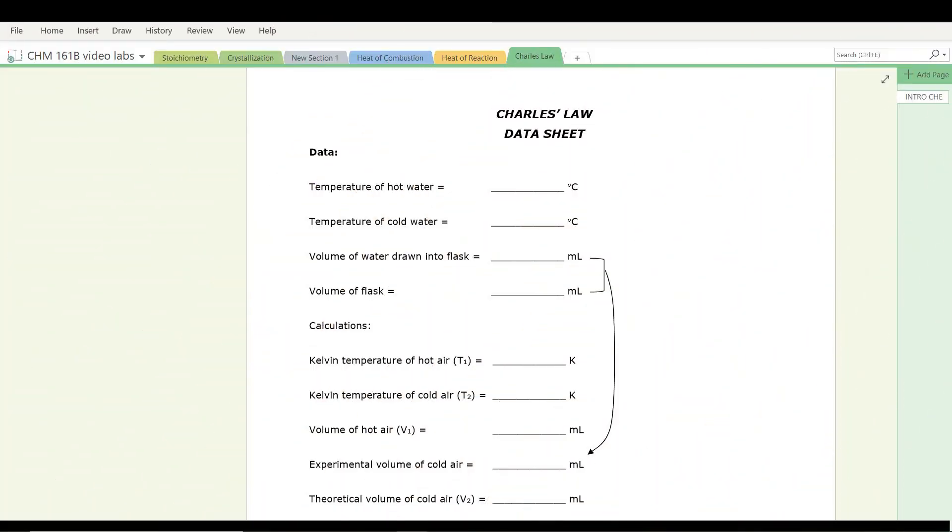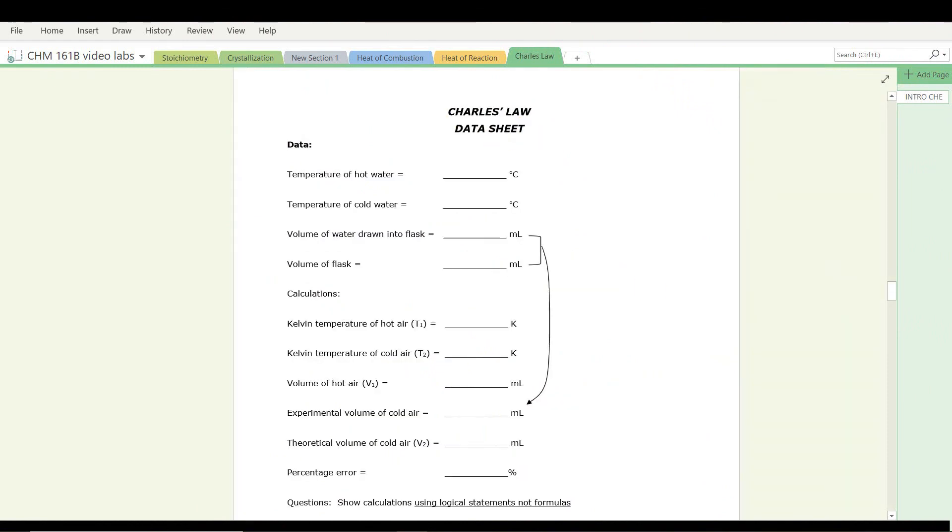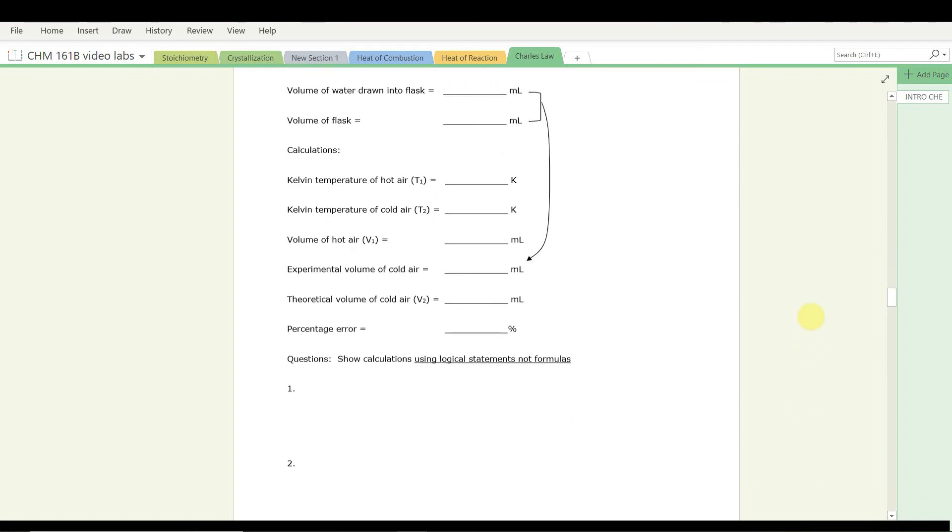I want to draw your attention to the data sheet in this experiment. Please enter your data and results exactly as shown on this sheet. Note that the volume of the flask minus the volume of water drawn into the flask will give you the experimental volume of cold air. You need to include answers to several questions that are included in the lab procedure. I believe I've given you all the information you need to do that. So this concludes our study of the Charles Law experiment.